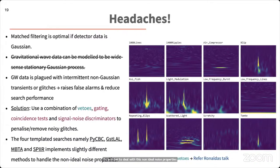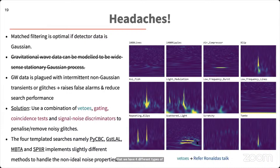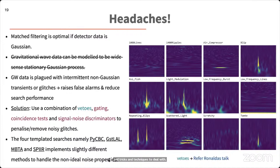There are four different types of templated searches: the PyCBC search, the GstLAL search, the MBTAOnline search, and the SPIIR search, each with its own set of tools and techniques to deal with the non-ideal noise properties. It would take a long time to cover each technique in detail, so I will focus on a handful of them.